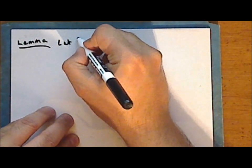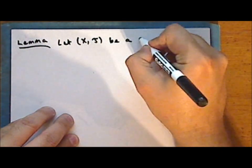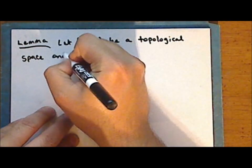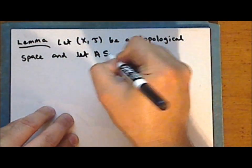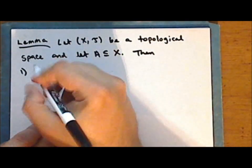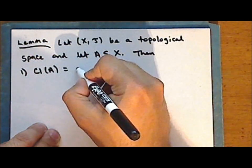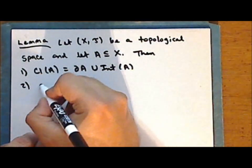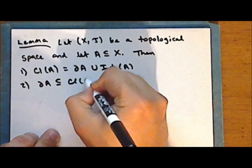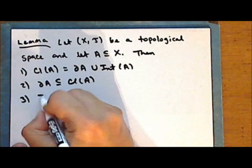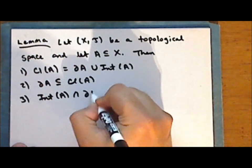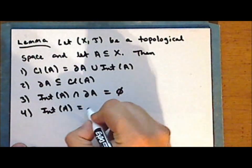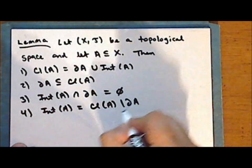Let the set X together with some topology tau be a topological space, and let the set A be a subset of the space X. Then: the closure of A is the union of the boundary of A with the interior of A; the boundary of A is contained in the closure of A; the intersection of the interior of A with the boundary of A is empty; and the interior of A is the complement of the boundary of A in the closure of A.